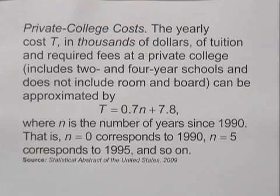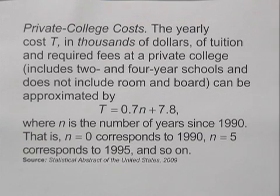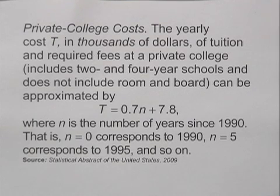The yearly cost T, in thousands of dollars, of tuition and required fees at a private college — including two- and four-year schools and not including room and board — can be approximated by the equation T equals 0.7N plus 7.8, where N is the number of years since 1990.